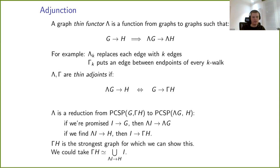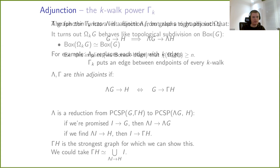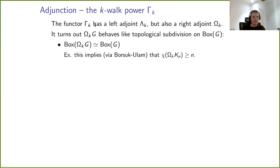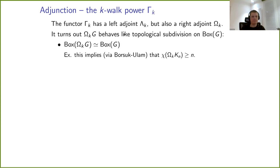When we studied examples of adjunctions known from graph homomorphism literature, their reductions turned out surprisingly powerful. It's known in graph theory that γ_k — the k-walk power — not only has a left adjoint λ_k (subdivision by k), but also has a right adjoint ω_k. The description of ω_k is quite technical, but intuitively ω_k(G) behaves like topological subdivision on the box complex — it blows out your graph into larger and larger loops, making any triangulation of a surface denser.